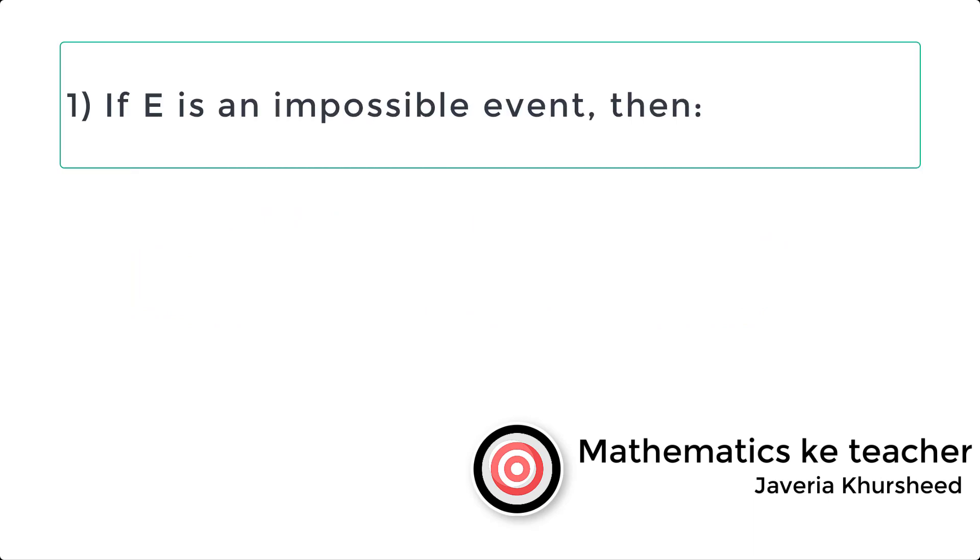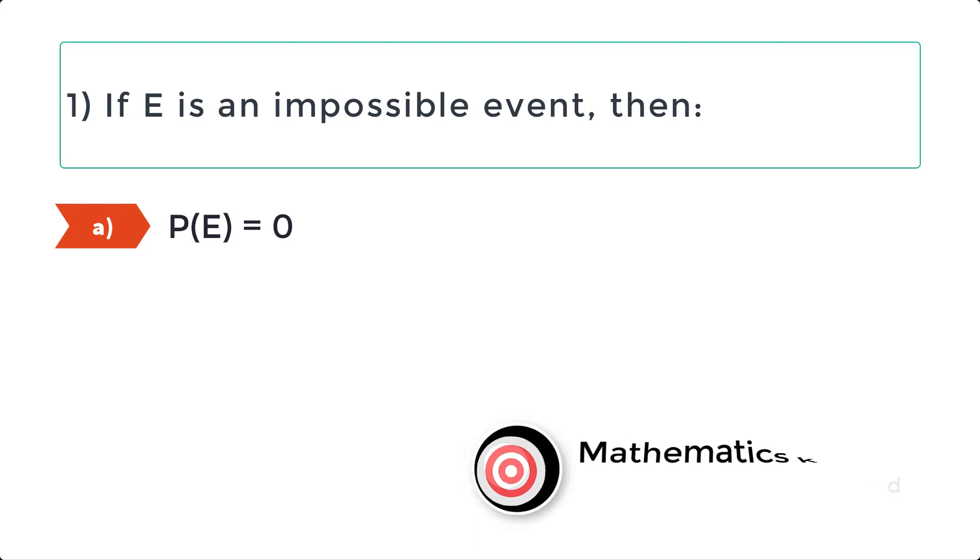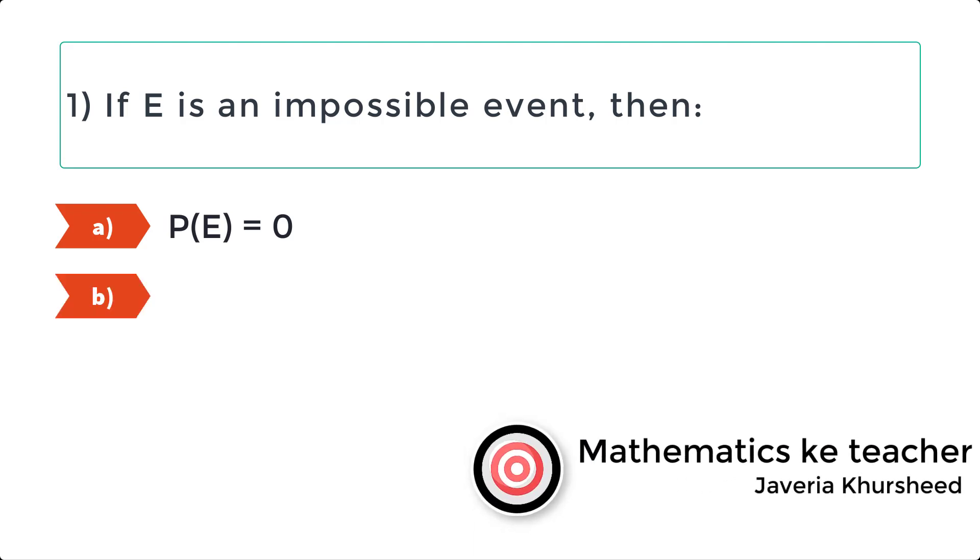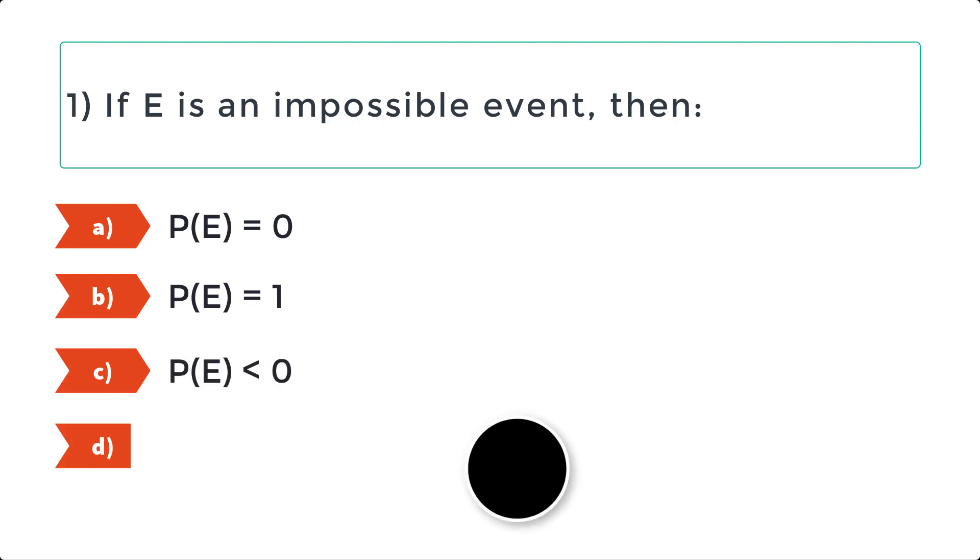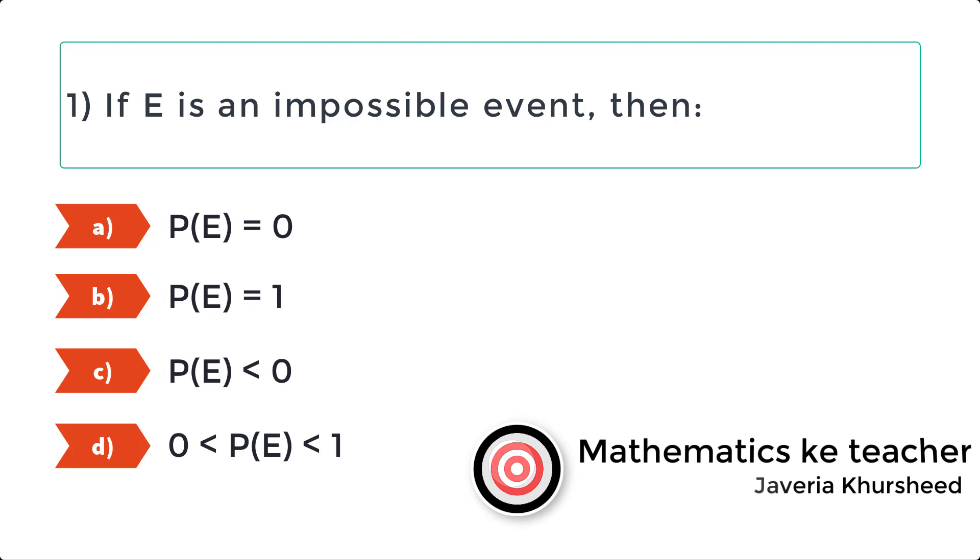Question 1: If E is an impossible event, then. A. P(E) equals 0, B. P(E) equals 1, C. P(E) less than 0, D. 0 is less than P(E) less than 1.